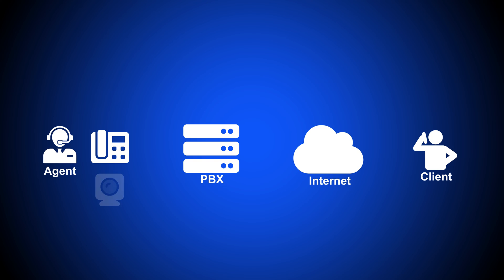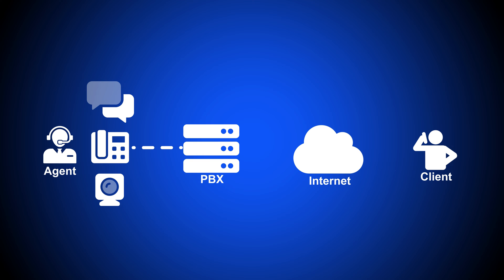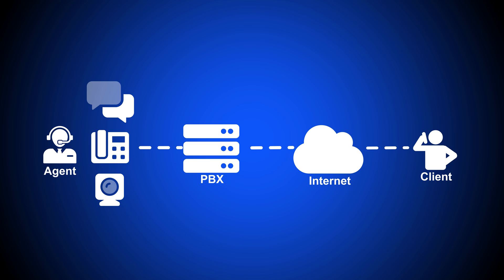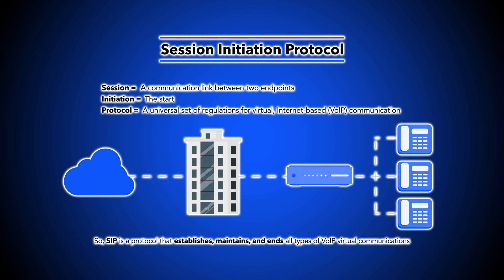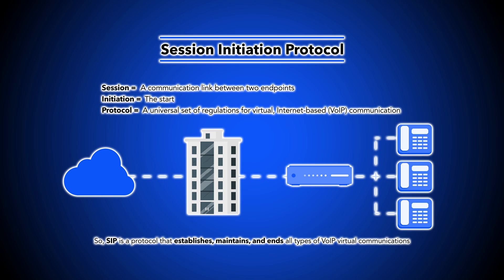A device, application, or web page can use SIP to establish a connection with a VoIP server, which then uses SIP to connect with another user, thus facilitating back-and-forth flow of data. The SIP protocol works by outlining rules that computing devices follow so that they can establish a connection and parameters for data exchange through a SIP server.